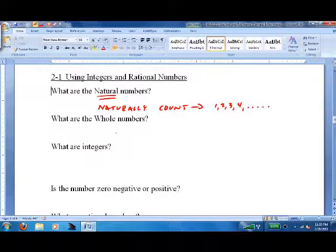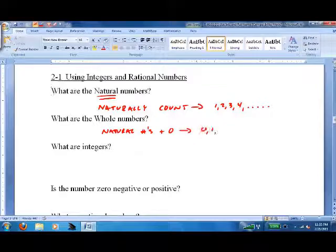What are the whole numbers? Well, that's just the natural numbers plus the number 0. So, 0, 1, 2, 3, 4, dot dot dot.